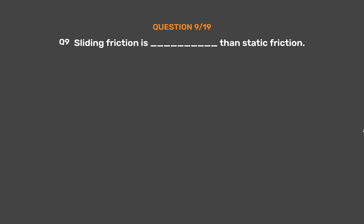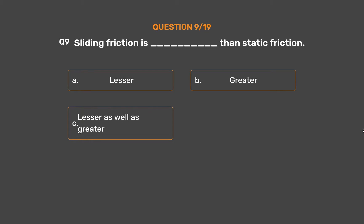Question number 9. Sliding friction is blank than static friction. Option A: Lesser. Option B: Greater. Option C: Lesser as well as greater. Option D: None of these.